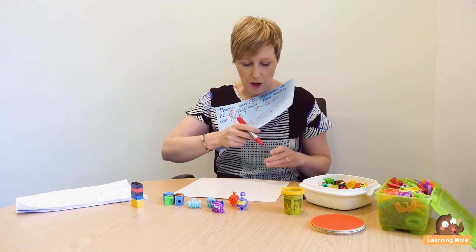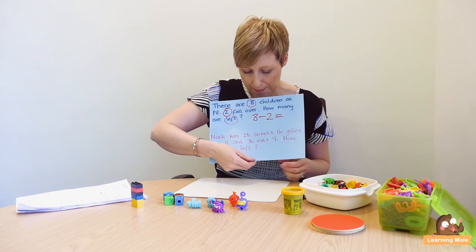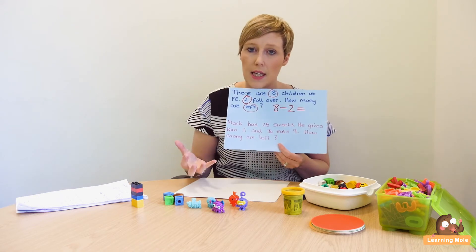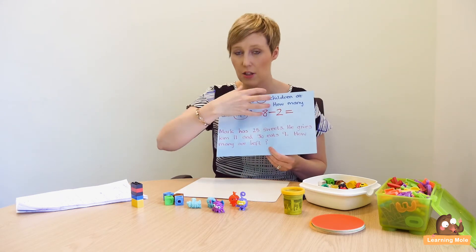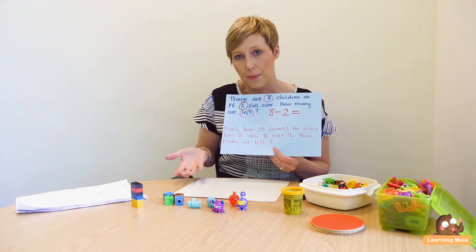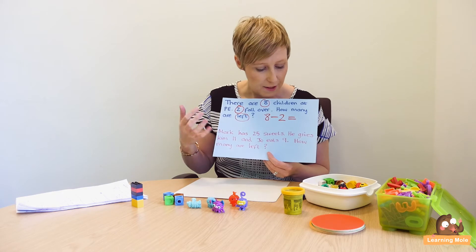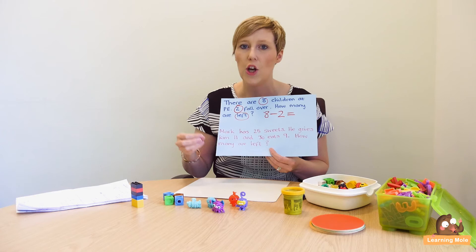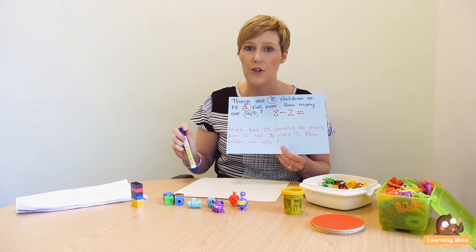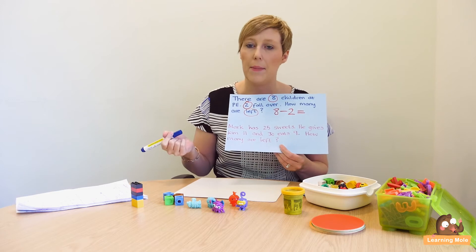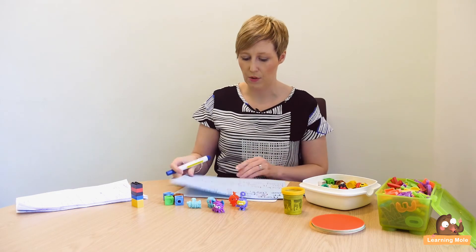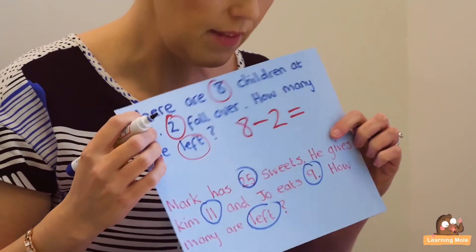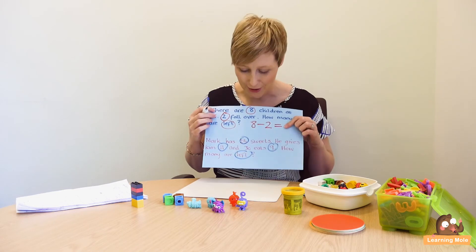The second problem is a bit more complex — what we call a multi-step word problem. Multi-step because there are two calculations that need to take place, and you can see the jump in complexity as your child becomes more advanced. So: Mark has 25 sweets, he gives Kim 11, and Jo eats 9 — how many are left? First, get your child to highlight the numbers — 25, 11, 9 — and the word 'left.'